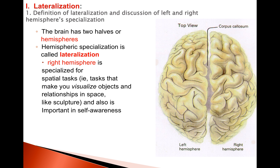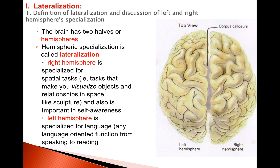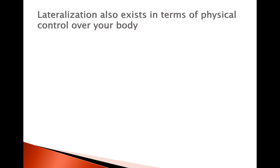The right hemisphere is specialized for spatial tasks — for instance, being able to visualize objects. An example is when a sculptor has to visualize the end product as they go through the process. Another example is visualizing where you're located in a building and which direction each side faces. The left hemisphere is specialized for language, which is a very strongly lateralized trait seen in almost all people, and includes speaking and reading.